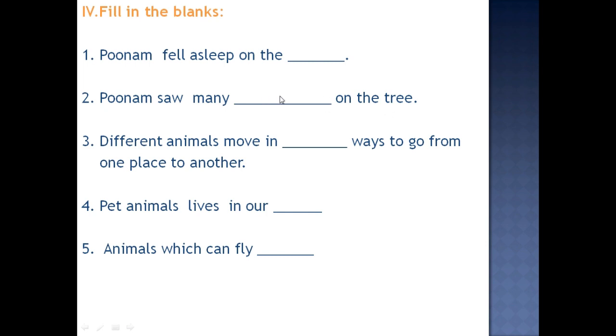So we saw the picture, so many animals, and what names you find out, we did that. Yes, remember kids? Different animals move in different ways to go from one place to another. So different animals, how they will move from one place to another? Different ways. So different animals can't go in the same way. All animals have different different ways to go from one place to another. Different different ways. Yes. So next one. Pet animals lives in our home. Yes, very good. Because pet animals are those we keep in our house, in our home, we raise them. Home.